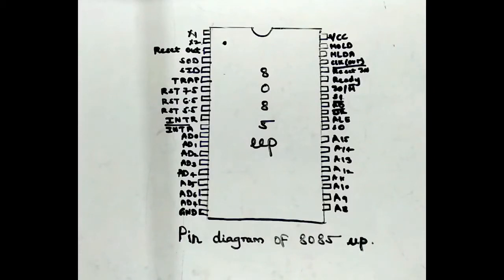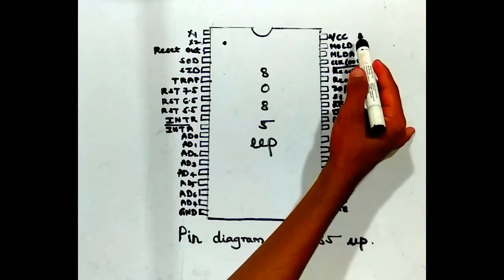In this video, we are going to see the pin diagram of the 8085 microprocessor. The 8085 microprocessor has 40 pins. The 20th pin is ground and the 40th pin is VCC.